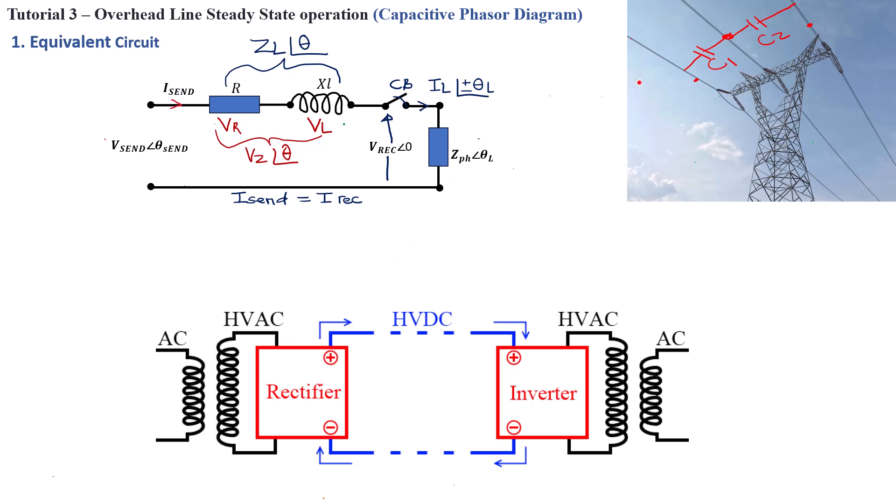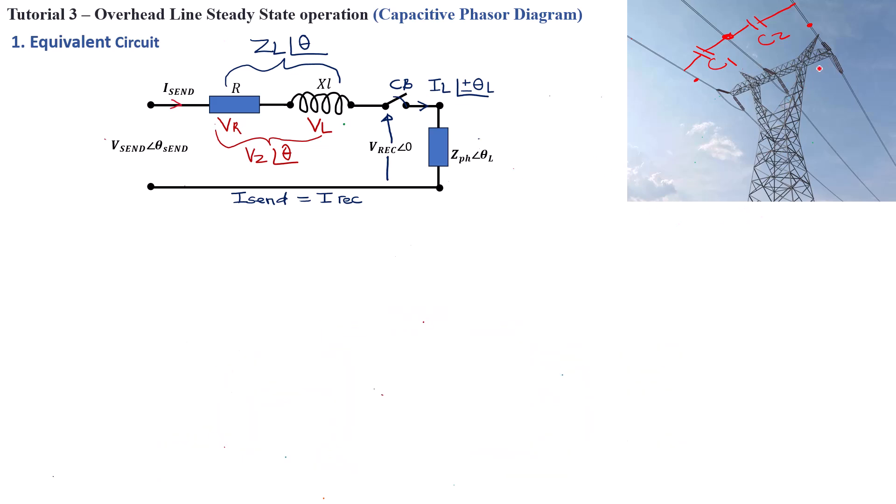And why AC power transmission? Because we're discussing power system steady state operation, and as we all know, all power system network transmission lines around the world are all done in alternating current, not in DC.